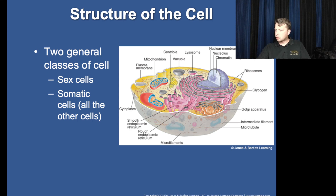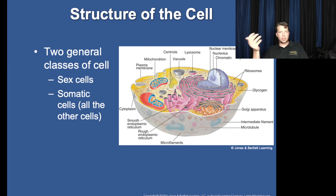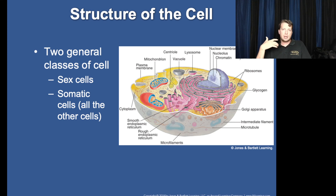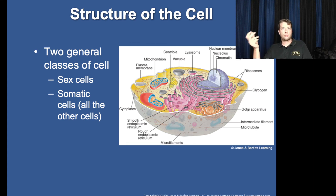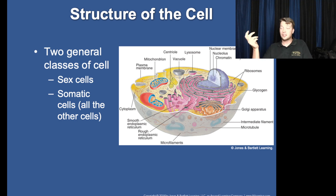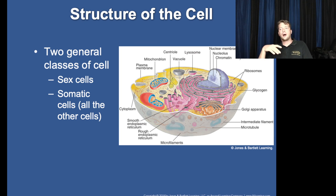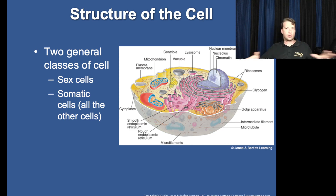Microtubules are a cellular structure — think of them like the scaffolding that holds the tent up. They give structure to the cell and also serve as pathways where vacuoles can be pulled along. They have tiny proteins that use ATP to drag the vacuoles through the cell — that's how things get transported across the cell.